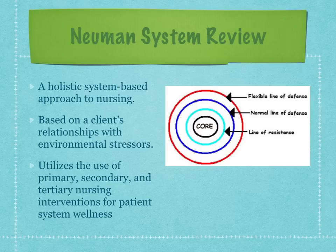Tertiary prevention relates to the adjustive process taking place as reconstitution begins and maintenance factors move the client back in a circular manner toward primary prevention.